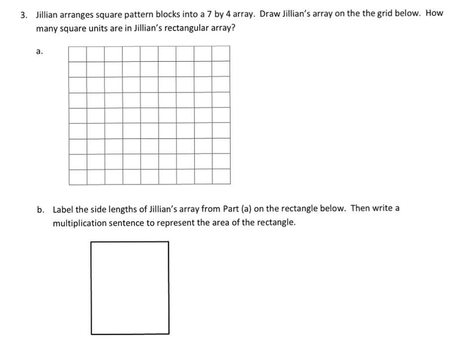In this problem, we are told that Jillian arranges square pattern blocks into a 7 by 4 array, and we're supposed to draw Jillian's array on the grid below. So the first thing we need to do is that 7 by 4 array. This 7 traditionally means the height, so let's do it down here: 1, 2, 3, 4, 5, 6, 7. And then the 4 means it's going to be 4 going side to side. To finish our array, this is what it's going to look like.